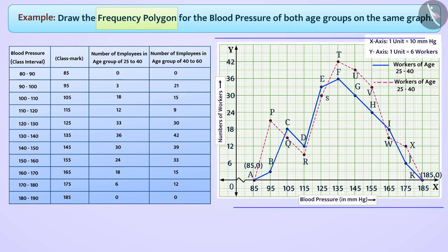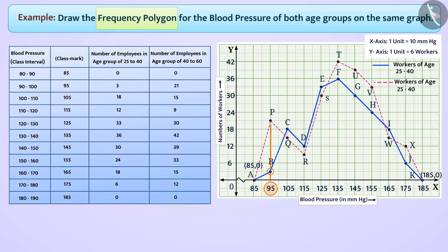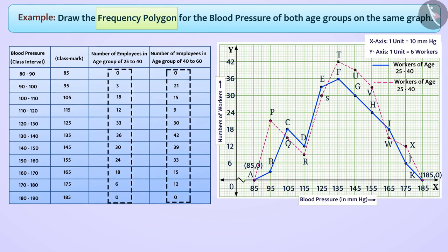We can get various information from this graph. For example, looking at the vertical line of blood pressure 95 mm Hg, employees with blood pressure 95 mm Hg are fewer in the age group 25 to 40 compared to those in the age group 40 to 60. We can also see that in both age groups, the maximum number of workers have blood pressure of 135 mm Hg. Point S and point G are on the same horizontal line, meaning the number of workers aged 40 to 60 with 125 mm Hg blood pressure equals the number of employees aged 25 to 40 with 145 mm Hg blood pressure.